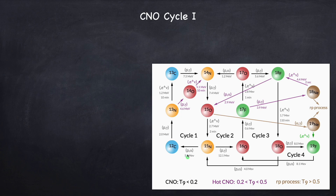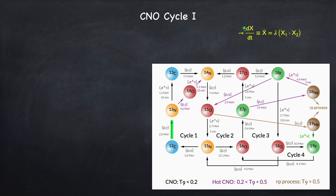Since we're doing cycle one, we're going to start with carbon-12. The first interaction is carbon-12 capturing a proton and emitting a photon and converting into nitrogen-13. Remember that we have the following general expression for a given nuclear reaction rate: the time rate of change of some species X, which I'm calling X-dot, is equal to some rate lambda, specific to the given nuclear reaction, times the product of the abundance of the parent particles.